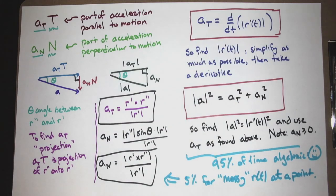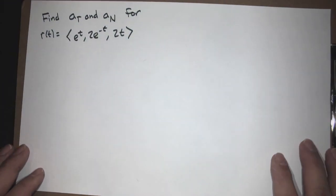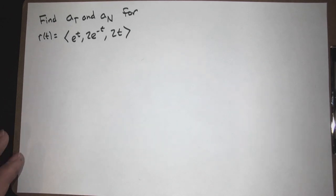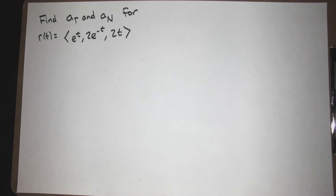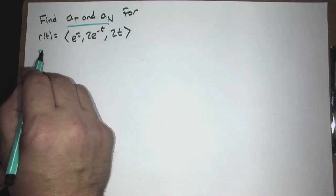Let's try it out: find a_T and a_N for the curve r(t) = (e^t, 2e^{-t}, 2t). Our plan: first find r prime and r double prime, then find the magnitude of r prime and the magnitude squared of r double prime, then compute a_T as the derivative of the magnitude of r prime, and finally solve for a_N using the Pythagorean theorem.